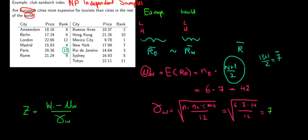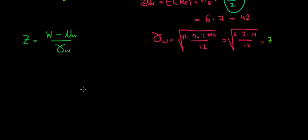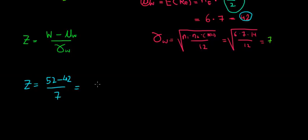The sum of the ranks in the European cities: adding up the rank values gives 8 + 6 = 14, 14 + 12 = 26, then 30, 43, and finally 52. So our rank sum is 52. The Z value equals (52 − 42) / 7 = 10 / 7 ≈ 1.43.